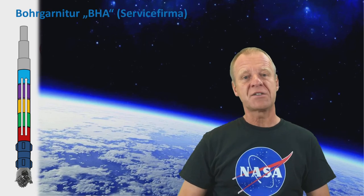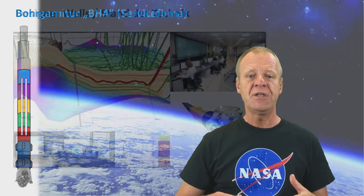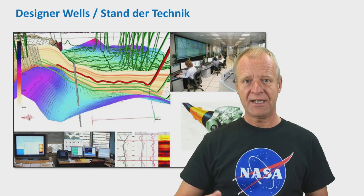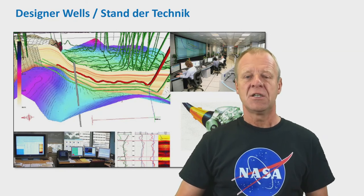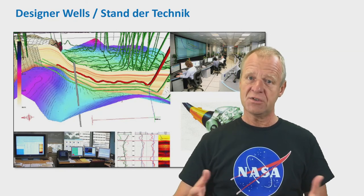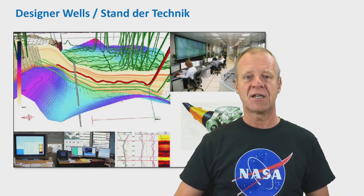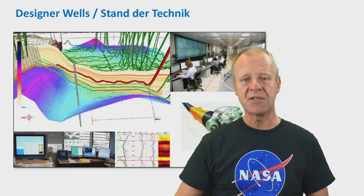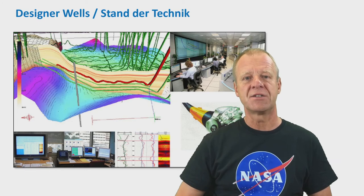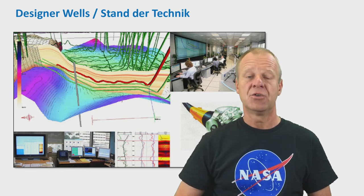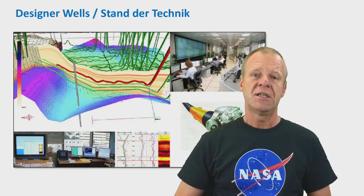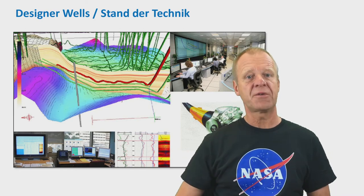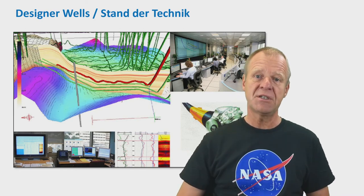We do not only have high-tech components in the string, like the space industry — we also make use of control centers like the space industry. These centers receive data from the drilling rigs via the internet, and the experts in the centers are able to direct the drilling of the wells to yield optimum production by giving commands from the central data center. So in drilling for oil and gas, we make use of very high technology comparable to space technology.